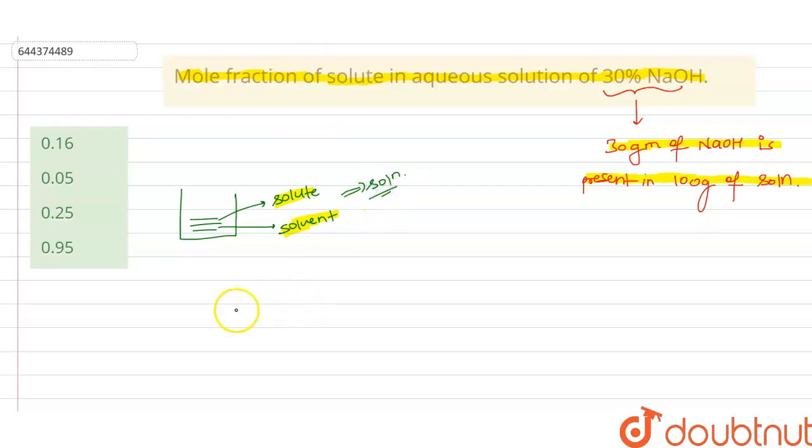So now we have to find the mole fraction of solute. The mole fraction of solute is defined as number of moles of solute divided by number of moles of solute plus number of moles of solvent.